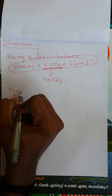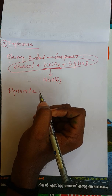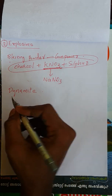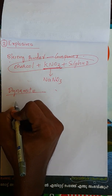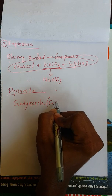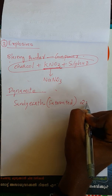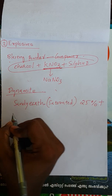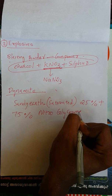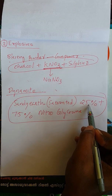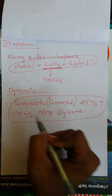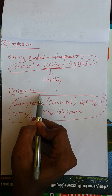We will use dynamite. Dynamite was invented by Alfred Nobel. Dynamite's composition is: 25% saturated sandy earth plus 75% nitroglycerin. This is the combination of dynamite.